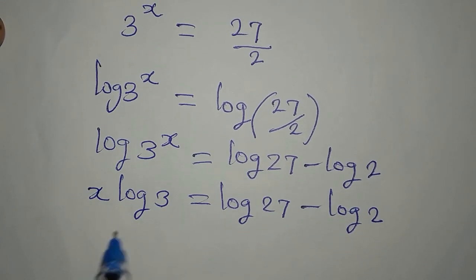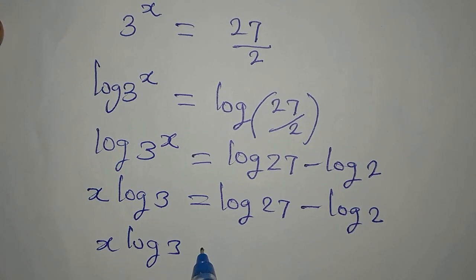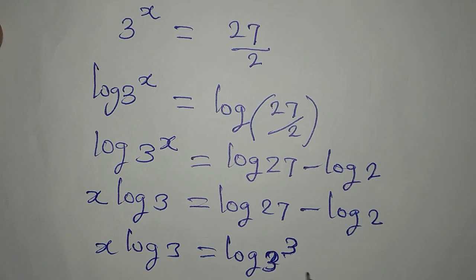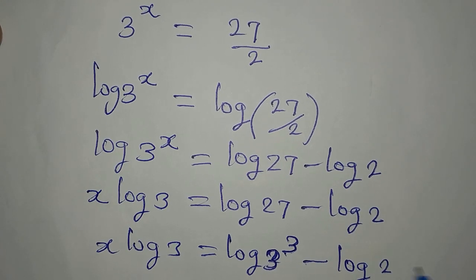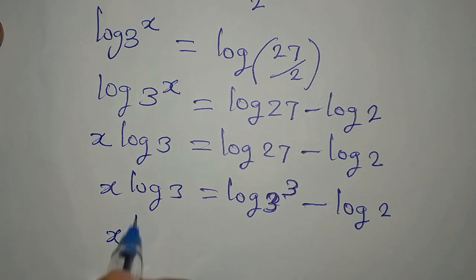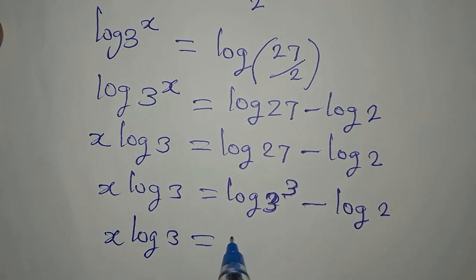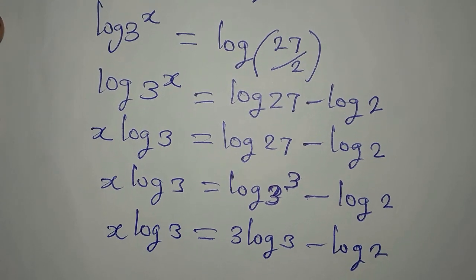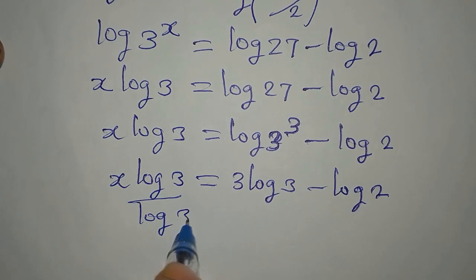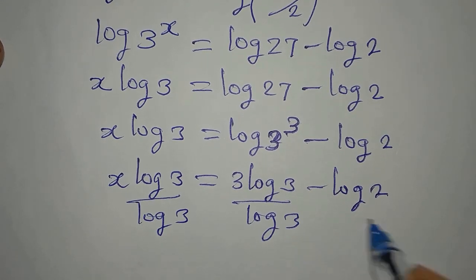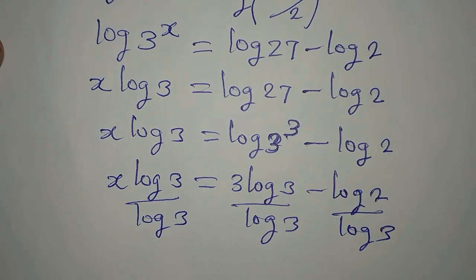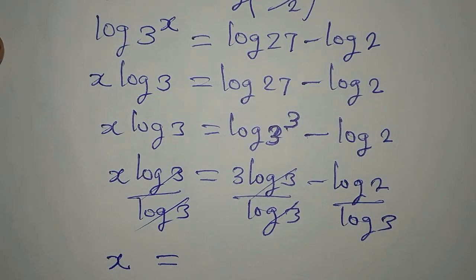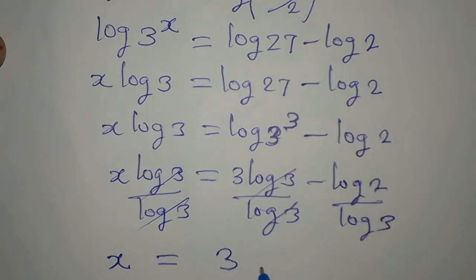We can break down 27 as 3 to the power of 3, so we have x·log 3 equals log(3³) minus log 2, which gives us 3·log 3 minus log 2. Now I divide both sides by log 3 so that log 3 cancels on the left. That gives us x equals 3 minus log 2 over log 3.